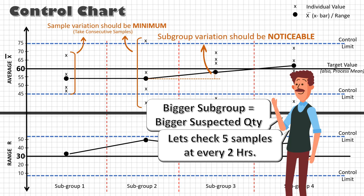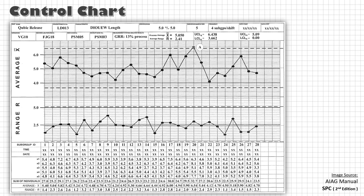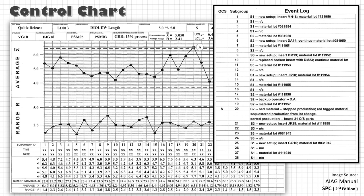Also, it is recommended to maintain an event log at each sampling cycle that includes any potential sources of variation such as shift change, new setup, material lot change.